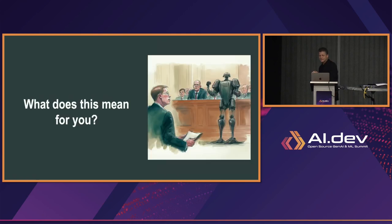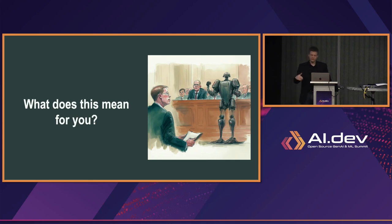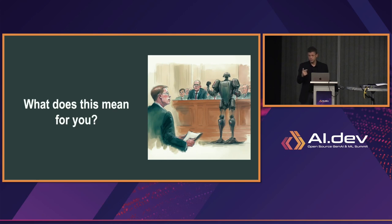So what does this mean for you all? A lot of the things you think of as being subject to copyright in the AI space — some of them are still copyrightable. If you write the code using PyTorch or TensorFlow to implement a model, your code is copyrightable — you wrote it. But the outputs of it aren't.